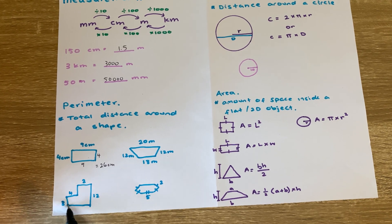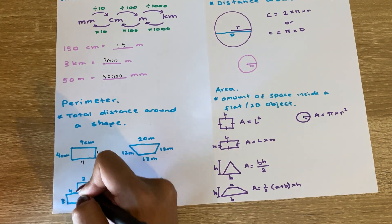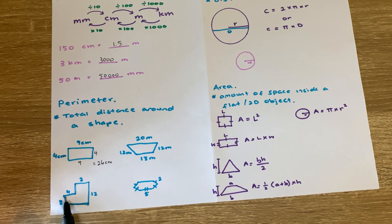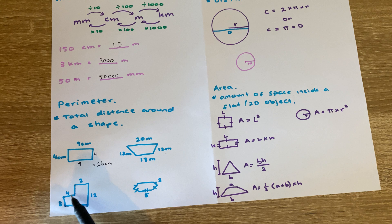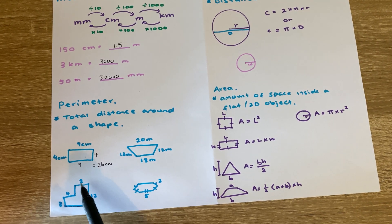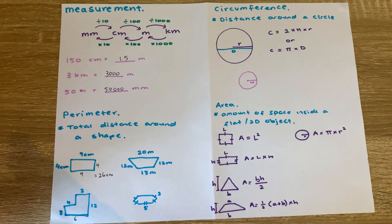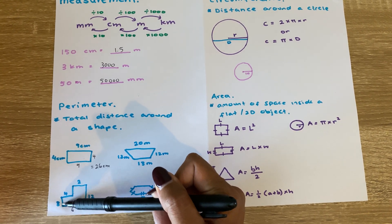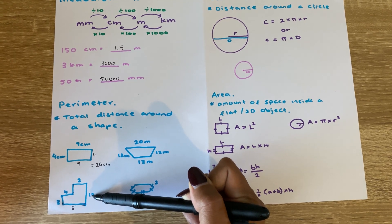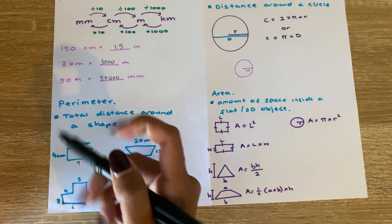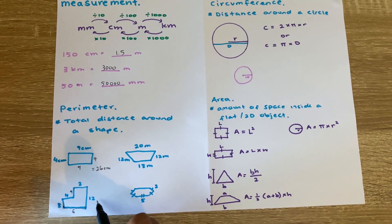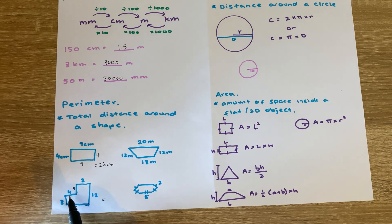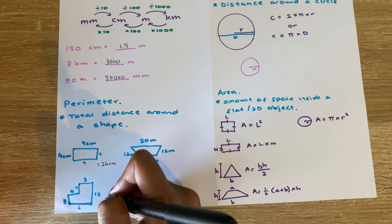For this irregular shape, we know this side is 12, and we have sides of 4, 3, and 2, but we don't know two of the lengths. We can work out the missing vertical side: 4 plus 2 equals 6. The missing horizontal side: 12 minus 3 equals 9. Now we have all sides, so 2 plus 12 plus 6 plus 3 plus 4 plus 9 equals 36 centimeters.